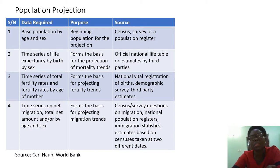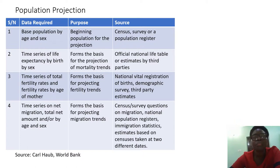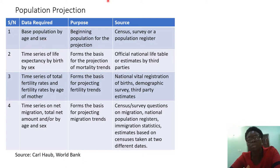Let's quickly look at the basic data we need to project a population, because we always need it to carry out planning and come up with policies. We're going to walk through this table. You have four columns: serial number, data required, purpose, and source. The first data required is base population by age and sex, because you always need to know the beginning population. The source for this is the census.